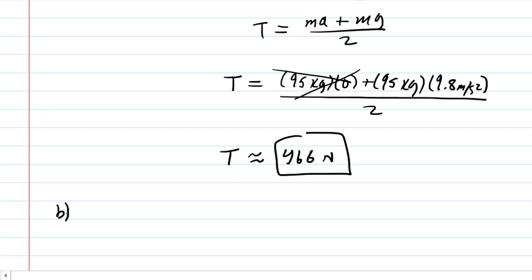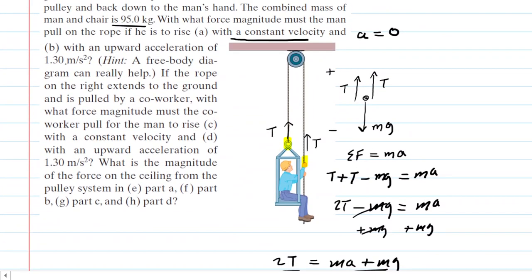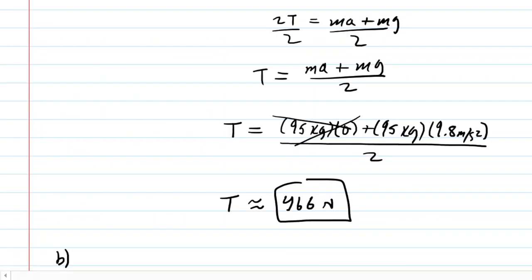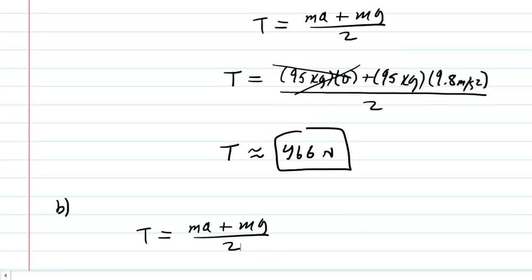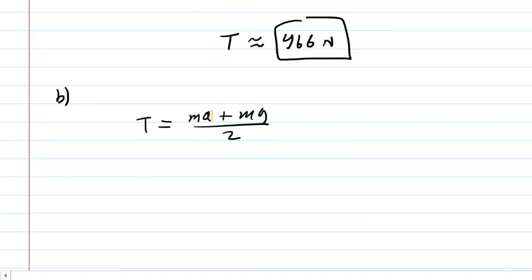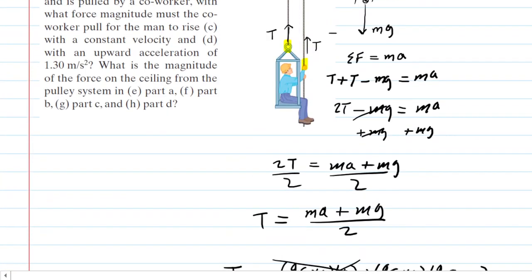In part B, we are given a different value for the acceleration. We are told in part B that there is an upward acceleration of positive 1.3 meters per second squared. So the good news here is that we can use this exact same equation and we can actually just plug in a different acceleration value. This time, instead of zero for the acceleration, we'll plug in that given value of 1.3. And when we plug that into our calculator, we will see that the tension force is about 527 newtons. So once again, that is the force magnitude with which the man is pulling on the rope.